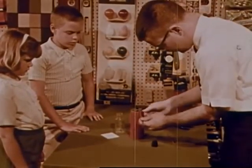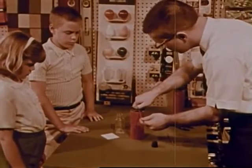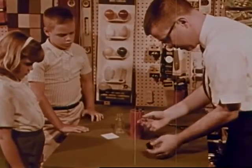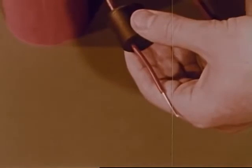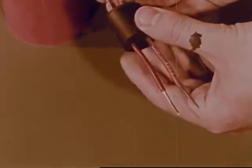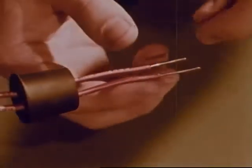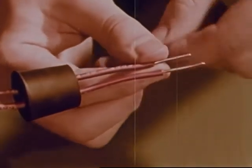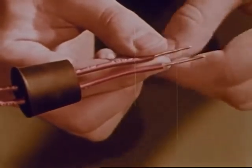But how does electricity make light? Mr. Grant is going to show them using another battery and other wires. He has passed two wires from the battery through a rubber stopper. Now he connects the wires together with another kind of wire that is very thin.